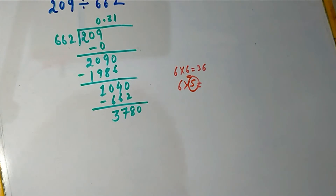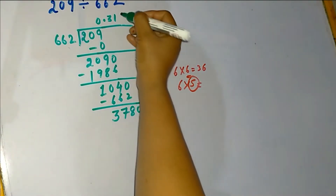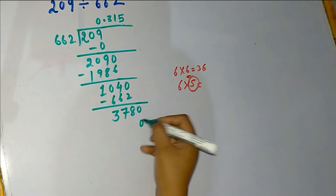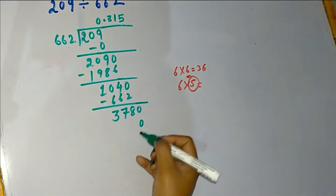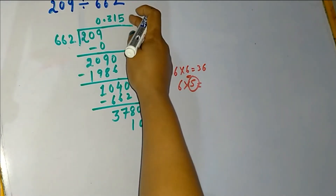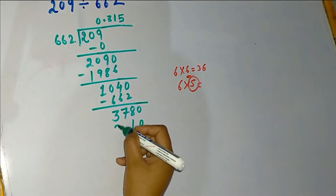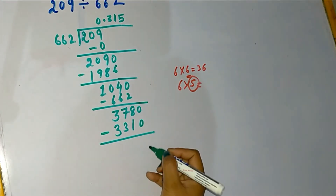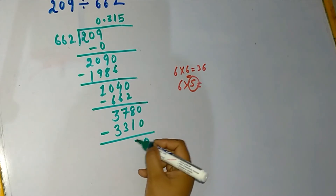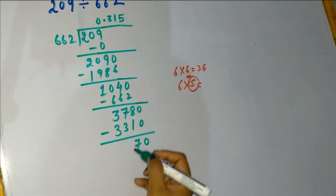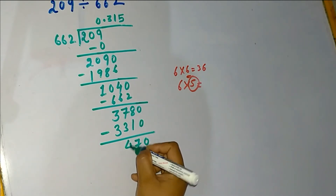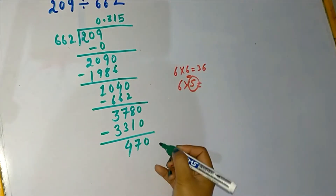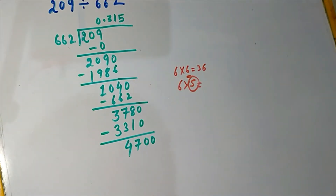Let's try 5 times 662: 5 × 2 is 10, carry 1; 5 × 6 is 30, plus 1 is 31, carry 3; 5 × 6 is 30, plus 3 is 33. Subtracting: 0 − 0 is 0, 8 − 1 is 7, 7 − 3 is 4, 3 − 3 is 0. Due to this decimal point, we are allowed to put one zero here.